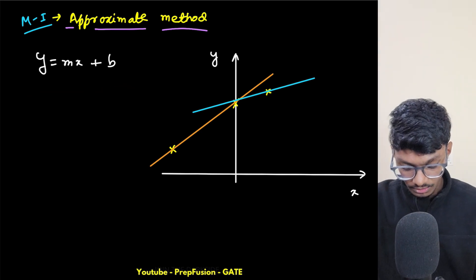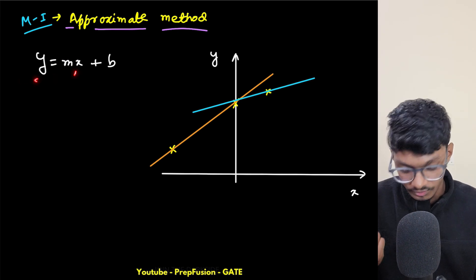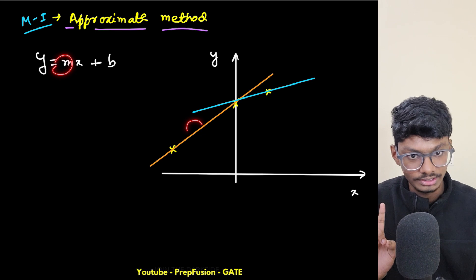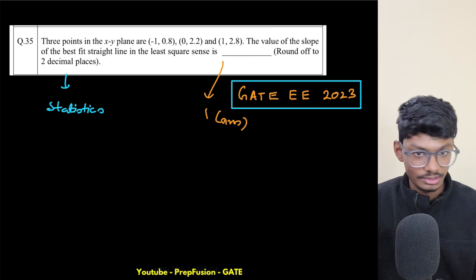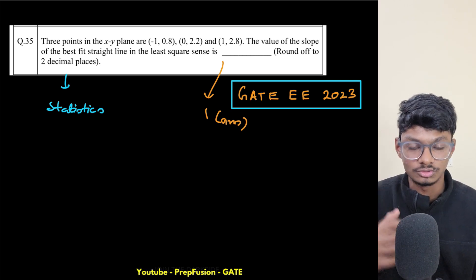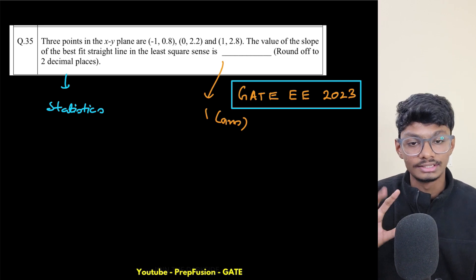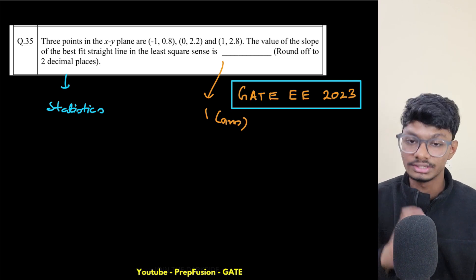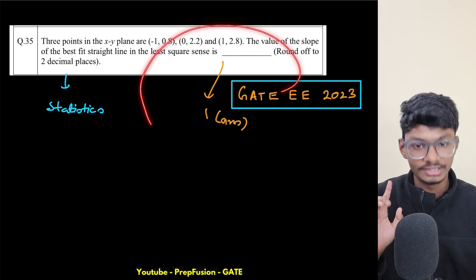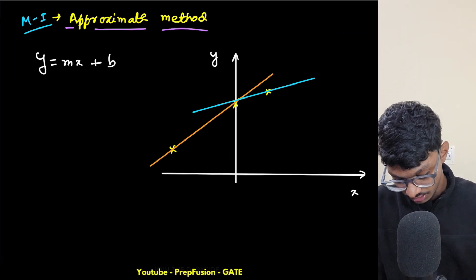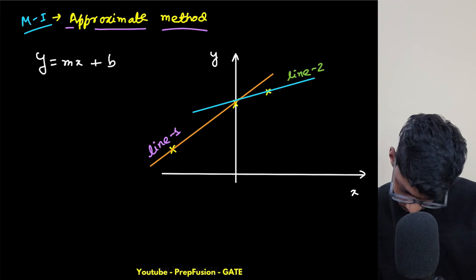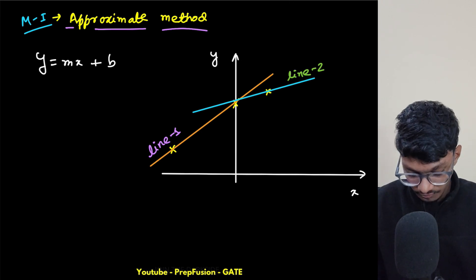The straight line equation is y = mx + b, where m is the slope and b is the y-intercept. I'll write the straight line equation for these two lines, calculate their slopes, take the average, and get the approximate slope. This is a calculative guess — better than a wild guess. In GATE examinations, a few questions allow you to use aptitude to find the answer this way.